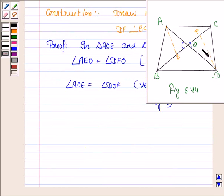Now, since in two triangles corresponding angles, two corresponding angles are equal, therefore by the angle angle criteria, triangle AOE is similar to triangle DOF.